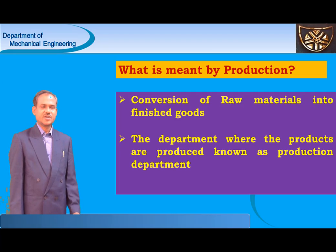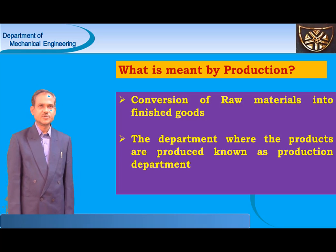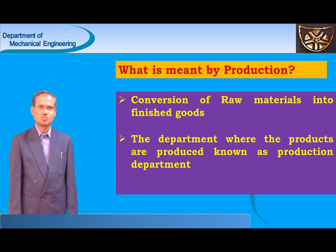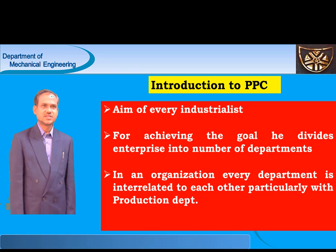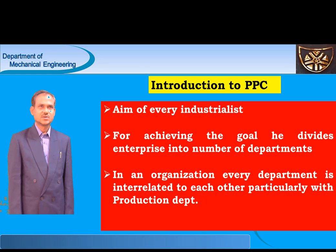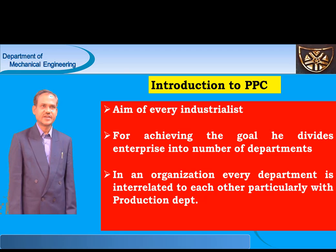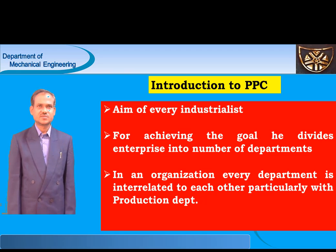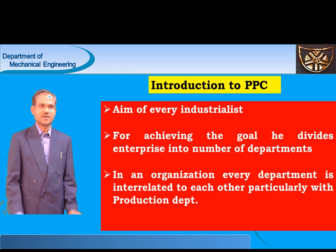First of all, I would like to explain about what I mean by Production. Production is the conversion of raw materials into finished products. The department where the products are produced is known as the Production Department. The aim of every industrialist is to produce better quality of products with minimum cost of production and get maximum profit.